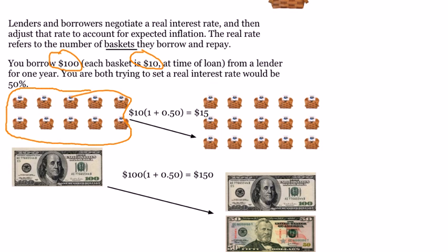And y'all are trying to make it such that however much money you give back to the lender, they can buy 15 baskets with it. So the number of their baskets go up by 5 baskets, which in percentage terms is 50%. And so what you basically did, you borrowed 10, you're going to pay back that 10, plus you're going to pay back 50% more. So you're giving them 15 total baskets.